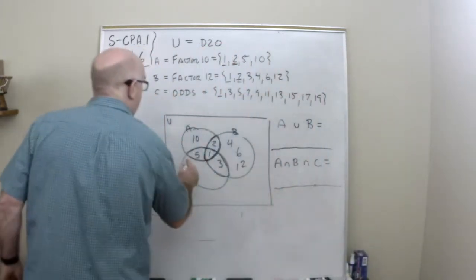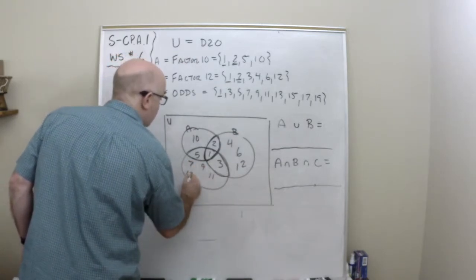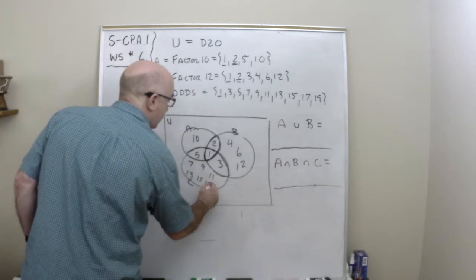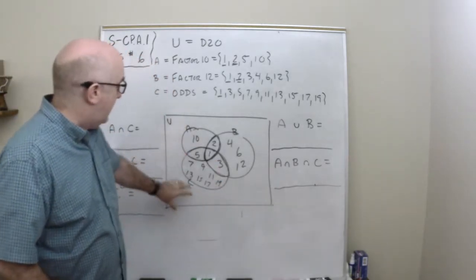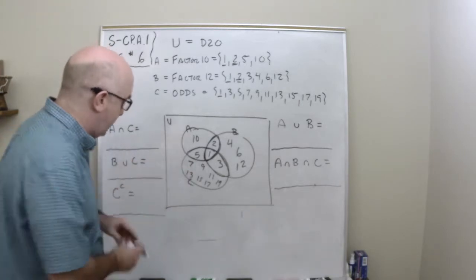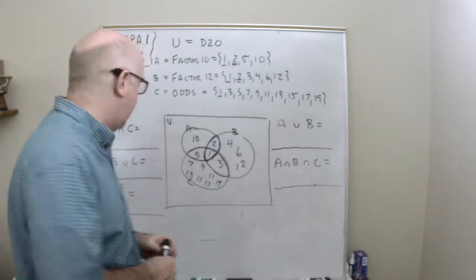Over here I get 1, 3, 5, 7, 9, 11, 13, 15, 17, and 19. Do you see how that's arranged now where this region—let's go through this first then I'll come back to this. There's lots going on here that I like.